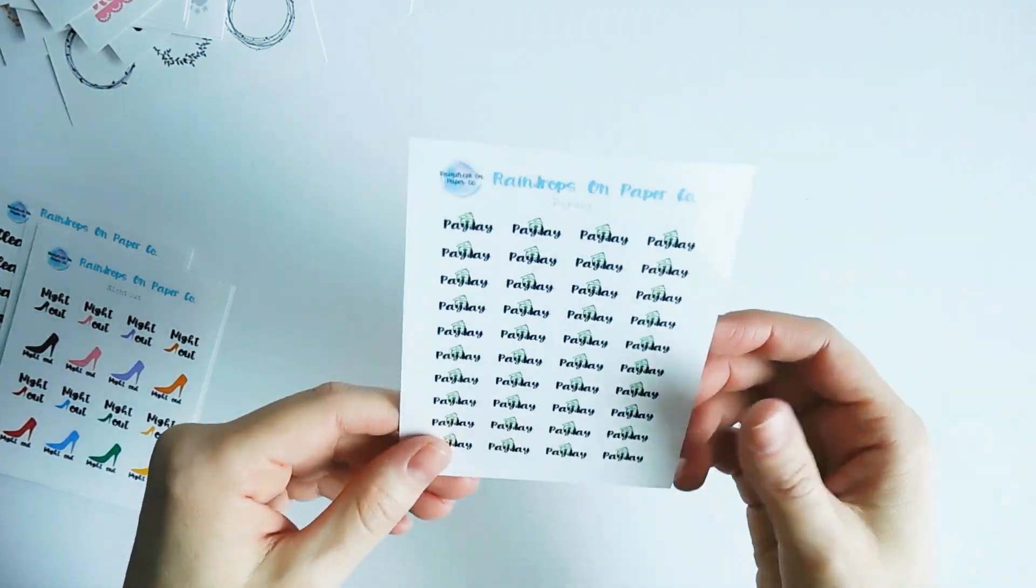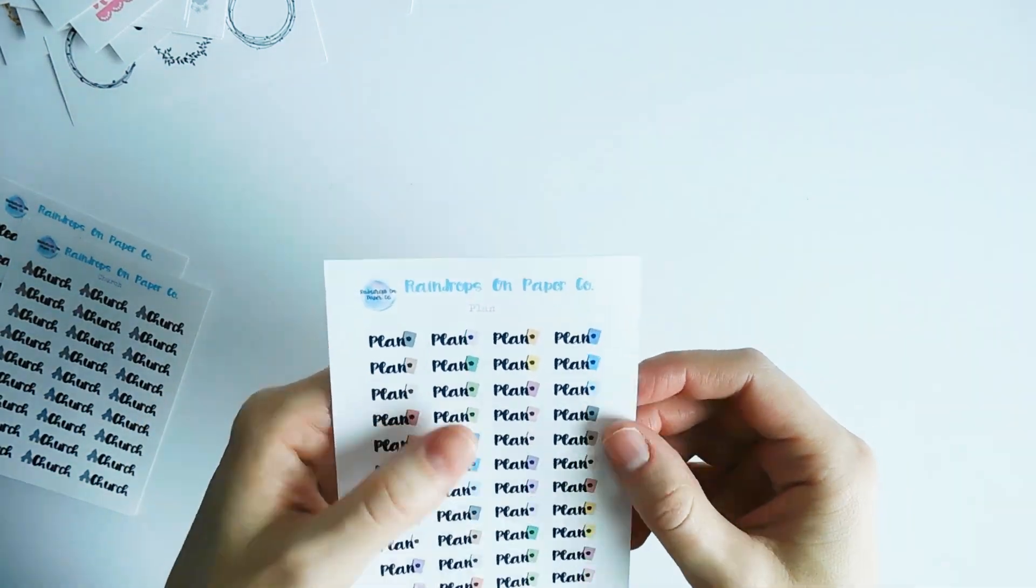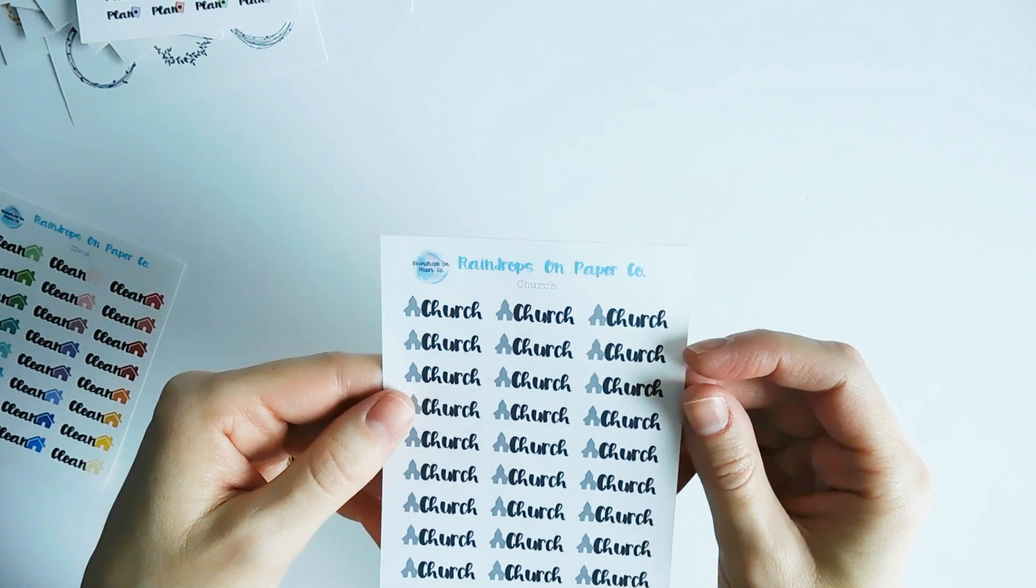And then these are night out stickers. Then I have these plan sheets. It's a script word and then it has a little planner next to it. We have church stickers and I have clean stickers.